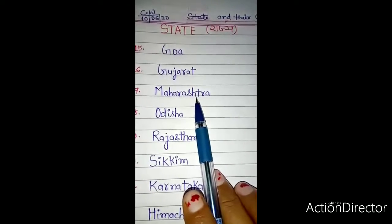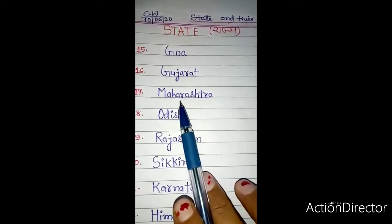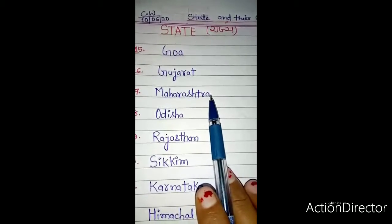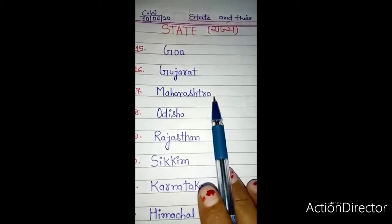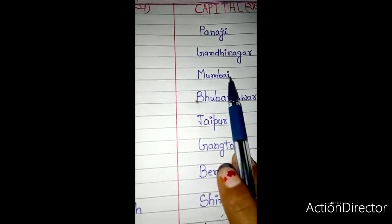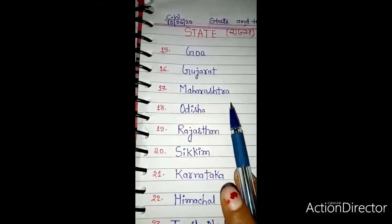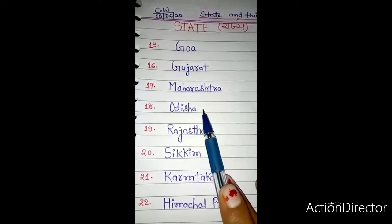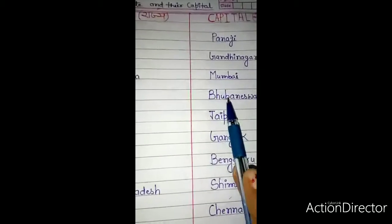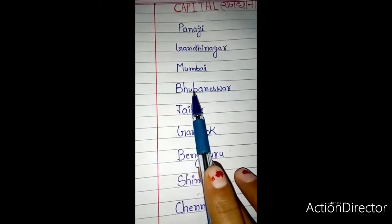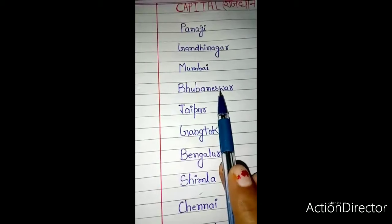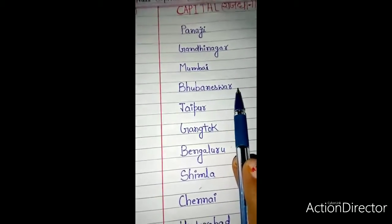Number 17: Maharashtra — M-A-H-A-R-A-S-H-T-R-A. The capital of Maharashtra is Mumbai — M-U-M-B-A-I. Number 18: Odisha — O-D-I-S-H-A. The capital of Odisha is Bhubaneshwar — B-H-U-B-A-N-E-S-W-A-R.